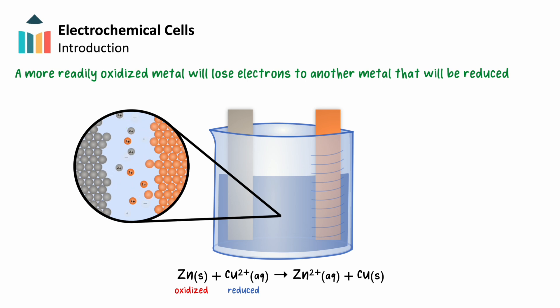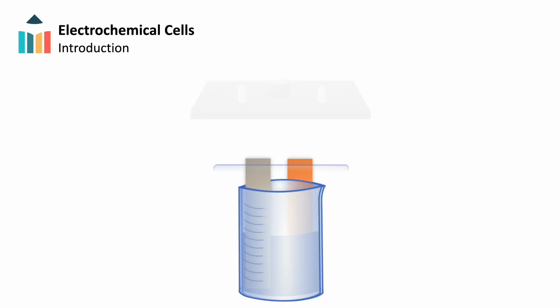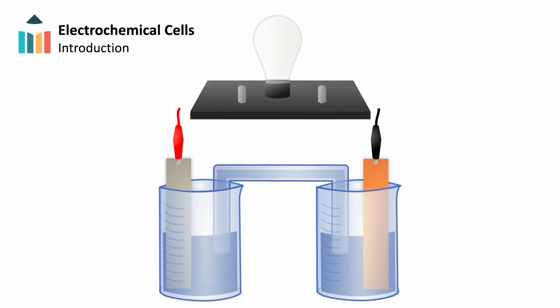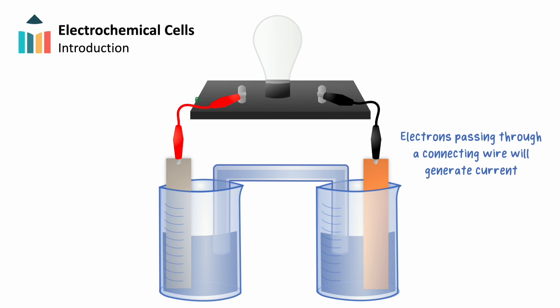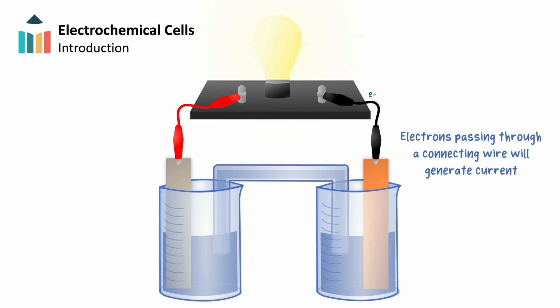Since redox reactions involve the movement of electrons, we can separate our two metals and connect them with a wire, forcing these electrons to move through the wire and therefore generate current.